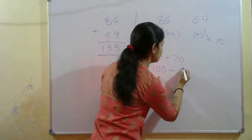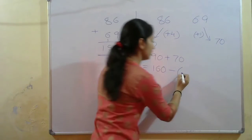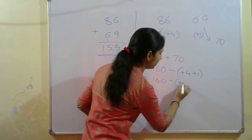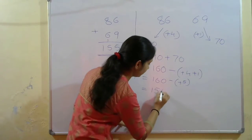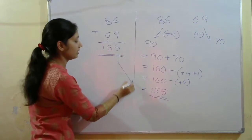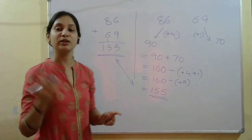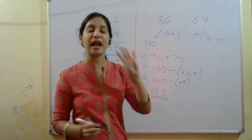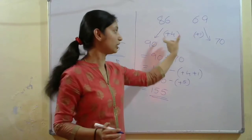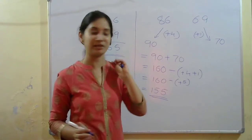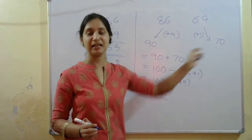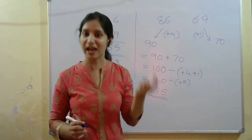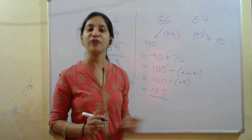So I am using a subtraction sign: 160 minus (4 plus 1) equals 160 minus 5, which equals 155. Please keep in mind: for 86 you added 4, for 69 you added 1, so in total you added 5. Adding 90 plus 70 gives 160, and subtracting that 5 gives you 155. You can do it mentally very fast.